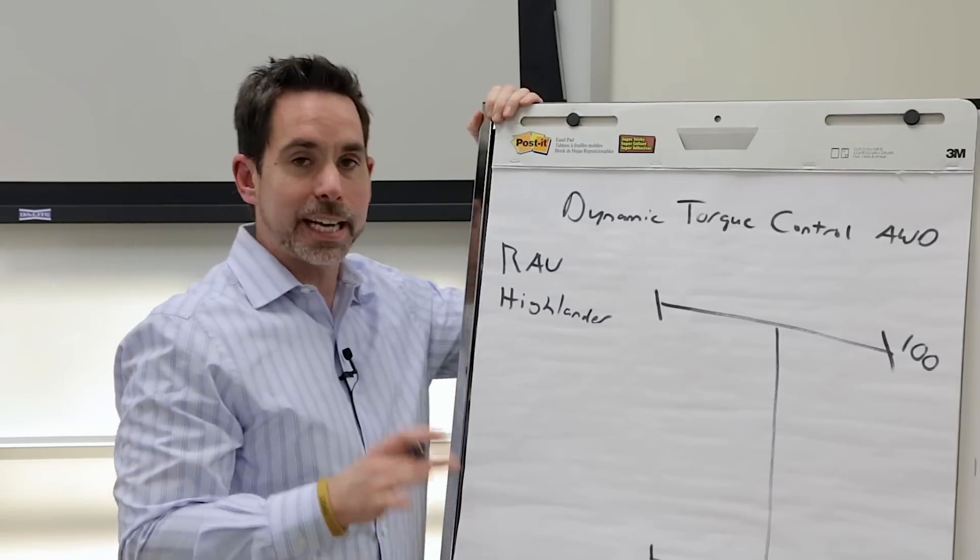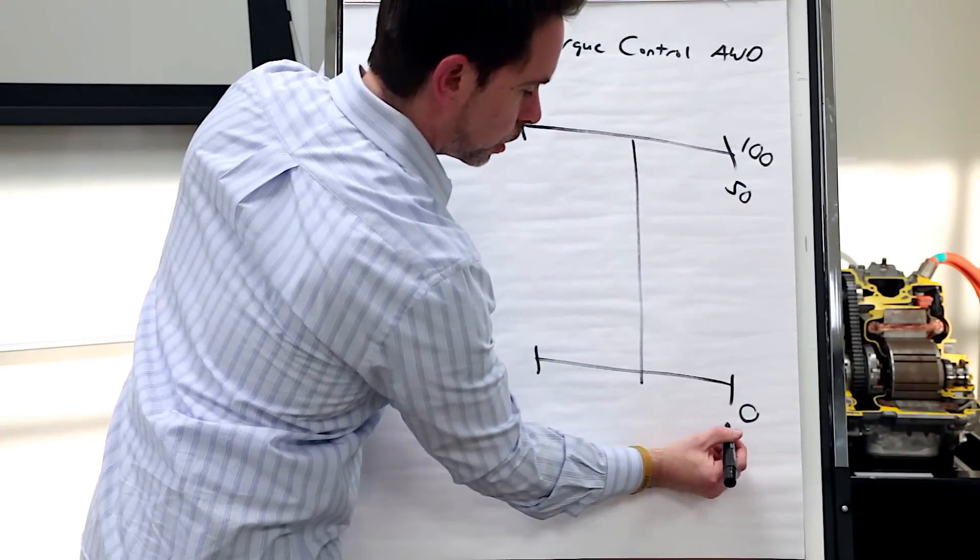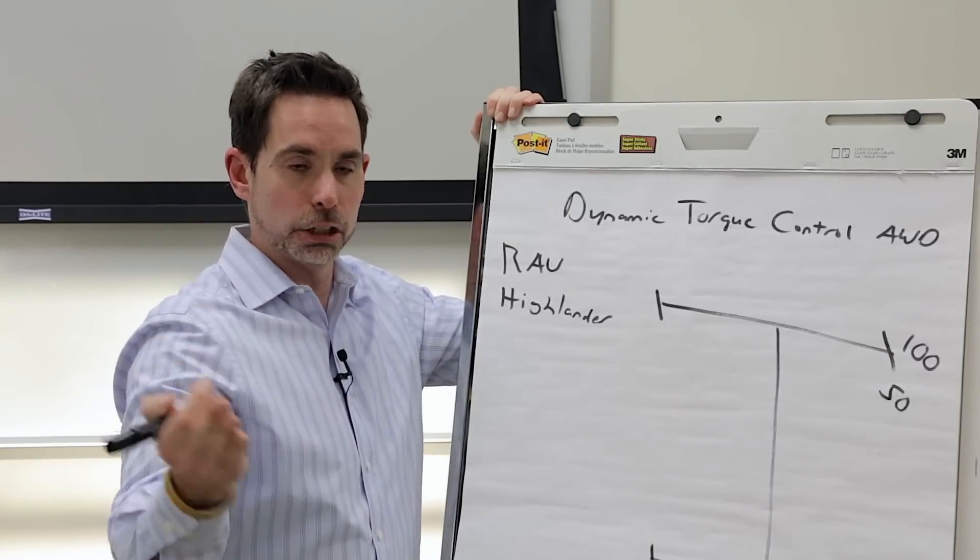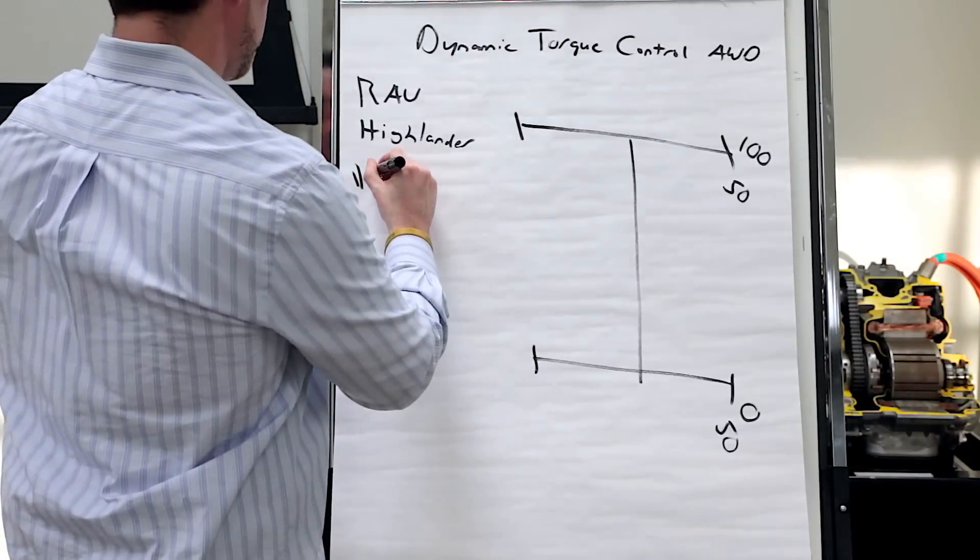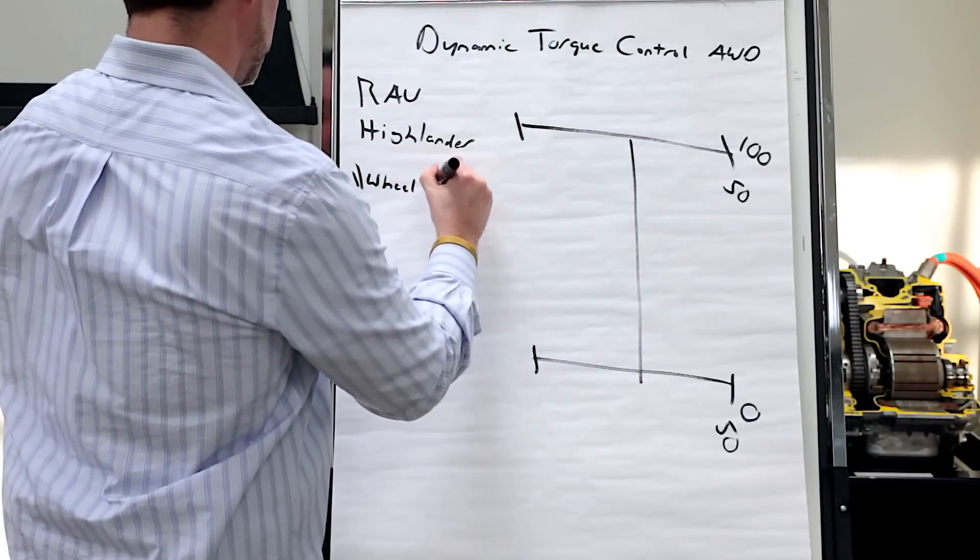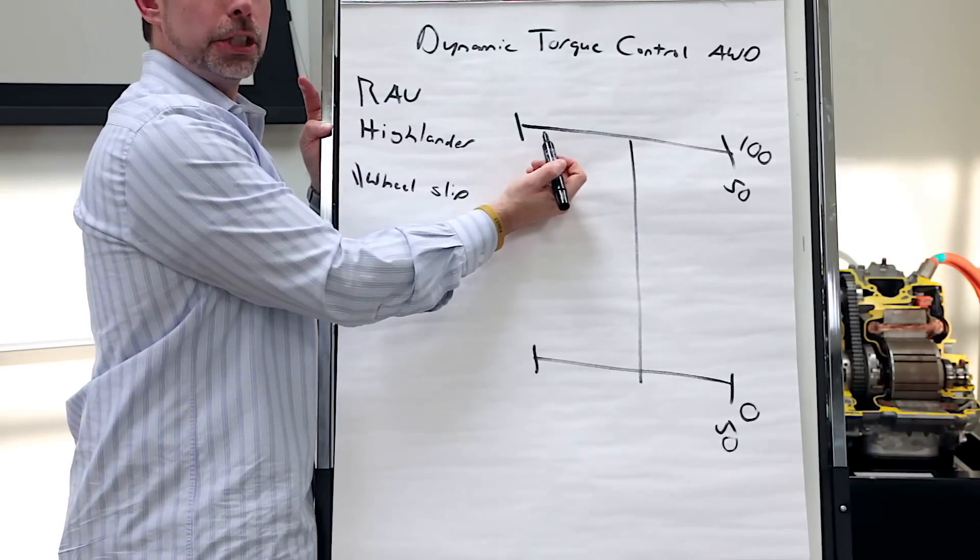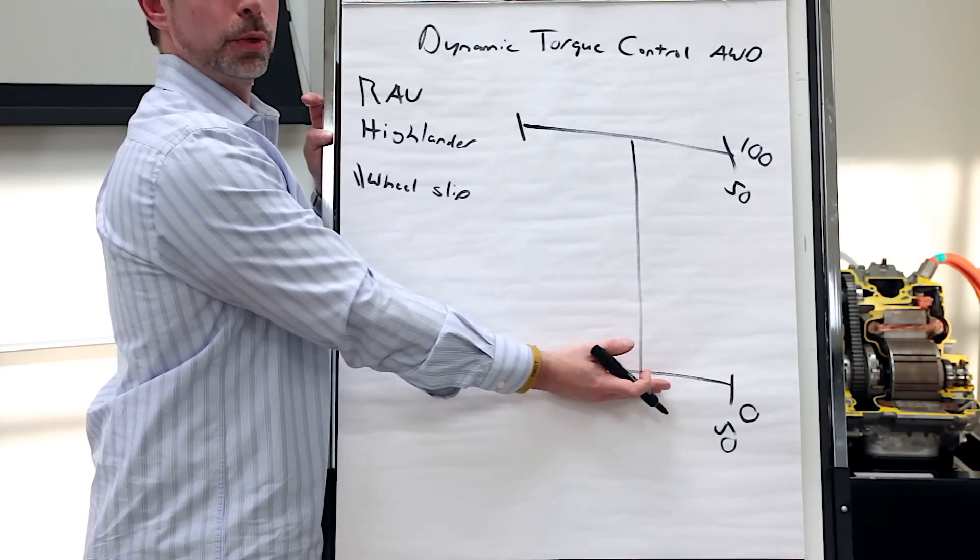However, I can get up to 50% of the power going to my rear wheels in three different conditions. And here's what they are. And you write them down. Number one is wheel slippage. My front wheels detect any slippage at all. Instantly, I'm going to get up to 50% of the power going to the rear wheels.